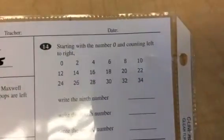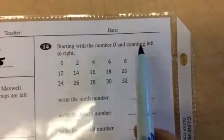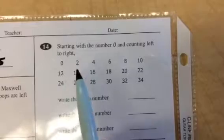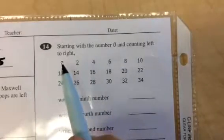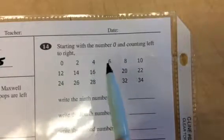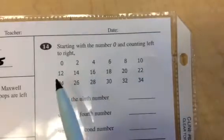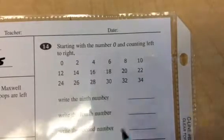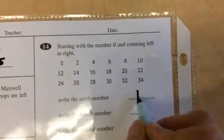Here it says, starting with the number zero and counting left to right. So write the ninth number. So first, second, third, fourth, fifth, sixth, seventh, eighth, ninth is 16. Easy peasy, right, my friends?